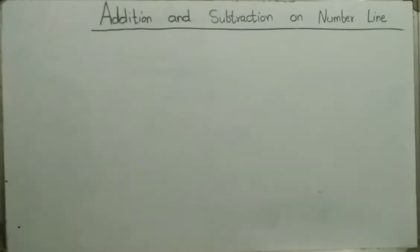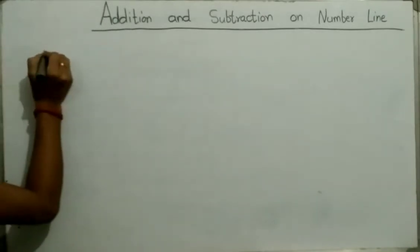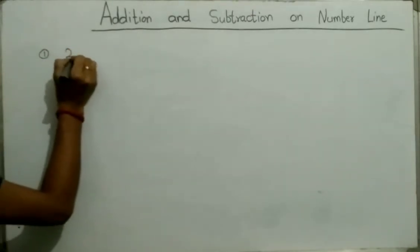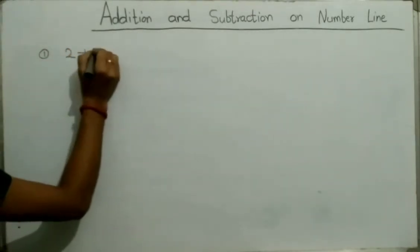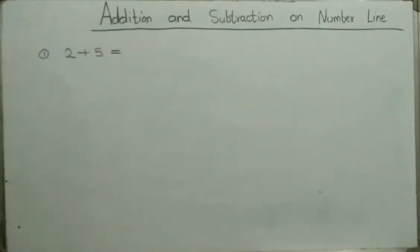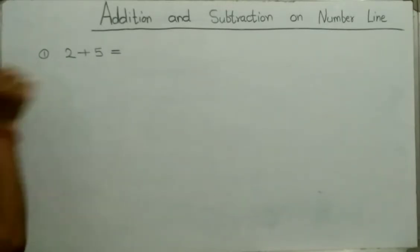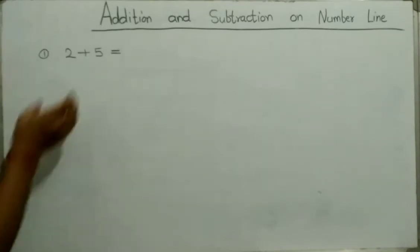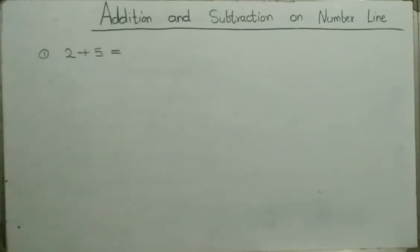Let us see an example: 2 plus 5. Here we will find the sum of 2 and 5. First of all, we will draw a number line.